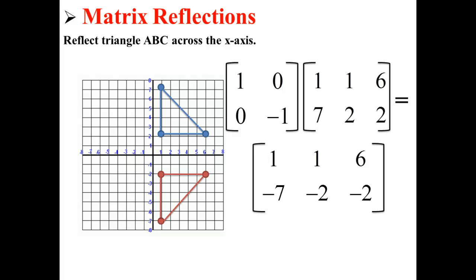Here we graph our new red triangle using our new points in our new vertex matrix. You can see that it has been reflected across the x-axis.